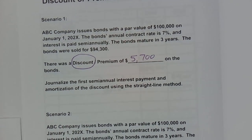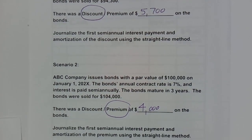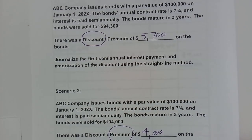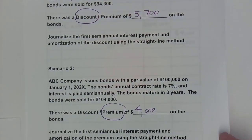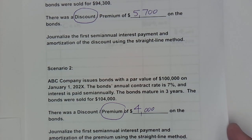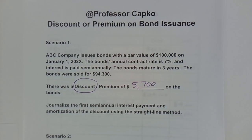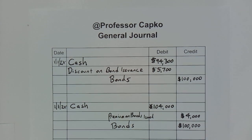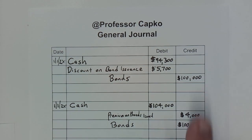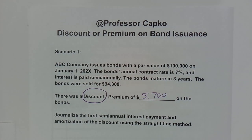In this we've got two scenarios. In scenario one there was a discount of $5,700 and in scenario two we have a premium of $4,000. We had done another video in which we recorded the transactions for the issuance of those bonds — I've linked it up here. Today we're going to talk about how to journalize the semiannual interest payments, and we'll show you just how easy it is to do that.